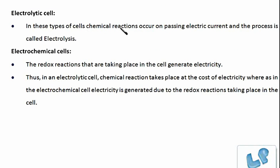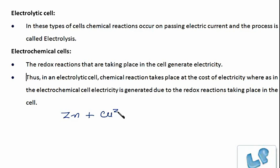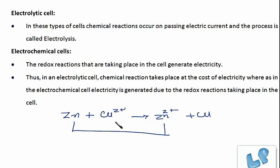In electrolytic cells, chemical reactions occur on passing electric current, and the process is called electrolysis. Whereas in electrochemical cells, the redox reactions taking place in the cell generate electricity. For example, in a dry cell, zinc is losing two electrons and copper ions are getting reduced. These redox reactions produce electricity.